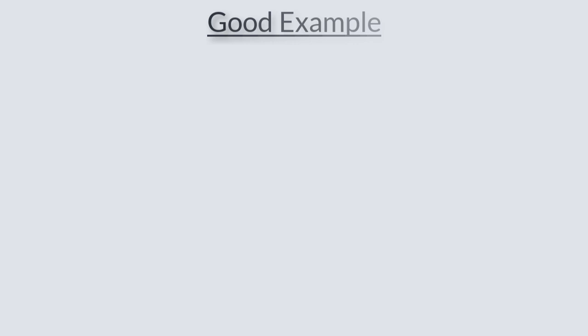So we have talked about some of the things you need to avoid when creating your webpage. Let's talk about some visual things you can do to help make your webpage more accessible. If you were trying to emphasize a word or phrase, you could change the font to be bold or italic. You could also use all capital letters, put asterisks around the word or phrase, place an image placeholder in front of the content, have the word 'important' before it, or use an image and make the alt text the word 'important.'